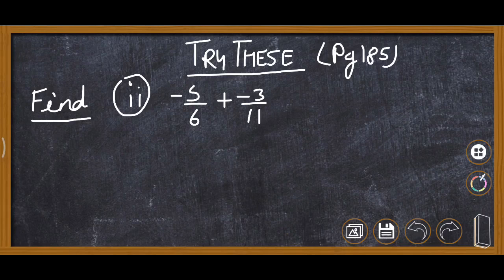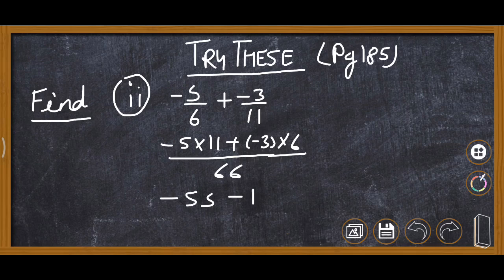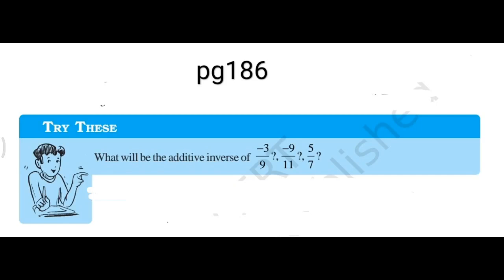In the next question, denominators are 6 and 11, so the LCM is 66. We multiply -5 by 11 to get -55, and -3 by 6 to get -18, all over 66. Then -55 - 18 = -73, so the answer is -73/66. This Try These is given on page number 186, Chapter 9.